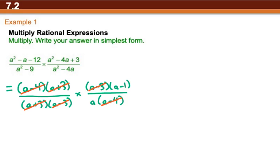And we cannot cancel this a with this a. This a here on the top is part of a factor. We would have to cancel the entire (a - 1), which we cannot do. So it can't cancel.